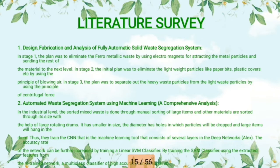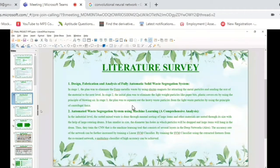We are reviewing four papers. The first paper is about the design, fabrication, and analysis of fully automatic solid waste segregation. It consists of three stages: in the first phase, ferro-metallic waste is removed by electromagnets; in the second phase, lightweight particles are removed using blowing air; and in the third phase, heavy waste particles are separated from lightweight plastic particles using a centrifugal course.